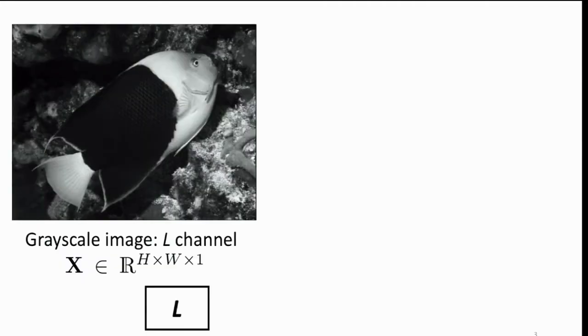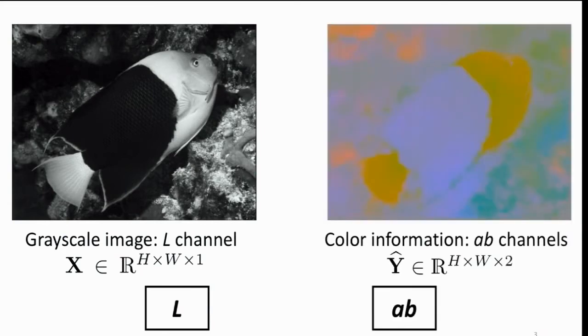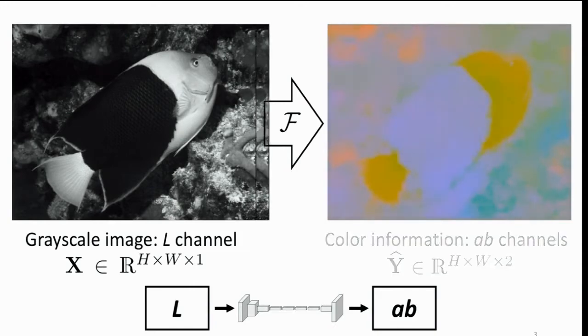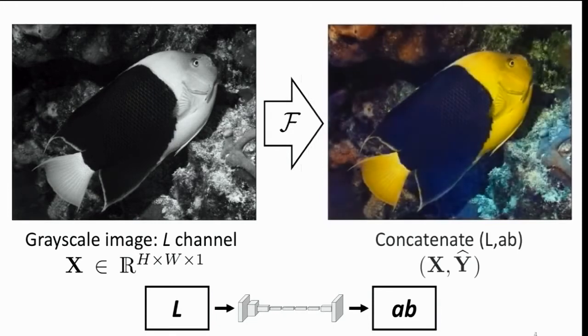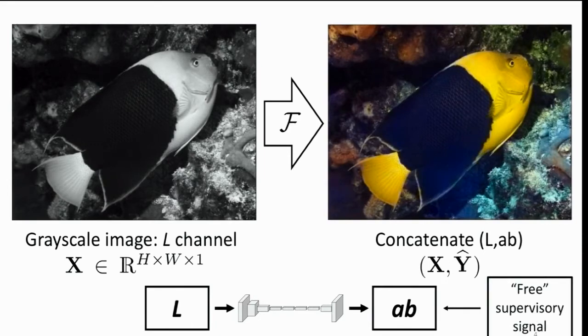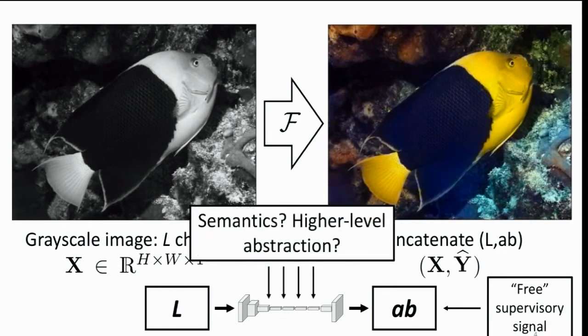One task that we've spent a lot of effort in is this task of automatic image colorization. We're looking to associate the grayscale channel or L channel and using that, we want to predict the A, B, or color information. If we're able to successfully do this, we can concatenate the output and the input and hopefully get a plausible colorization of the grayscale image. We learned this mapping with a CNN. By doing this problem, we have a free supervisory signal. After all, any color image can be broken up into its grayscale and color components. Hopefully, by doing this task, we can actually learn a network that internally has semantics or perhaps even some higher-level abstractions.